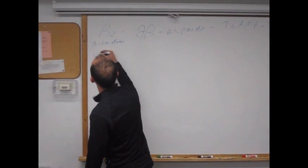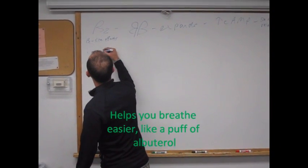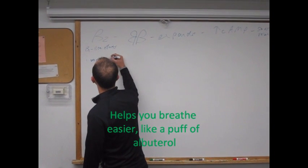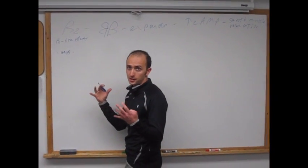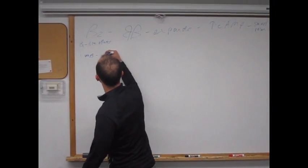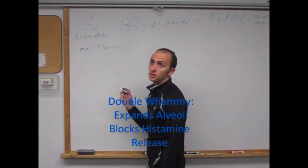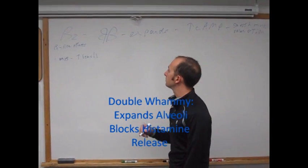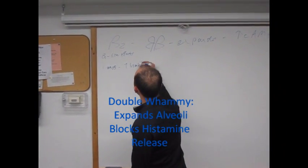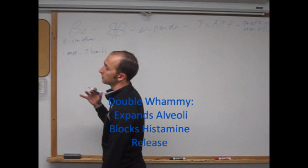One, it works on the lungs, that's number one probably. That's why you take your albuterol inhaler. What's it going to do? It's going to expand your bronchi. It actually inhibits mast cell histamine release, so it has a double whammy there on affecting the lungs.